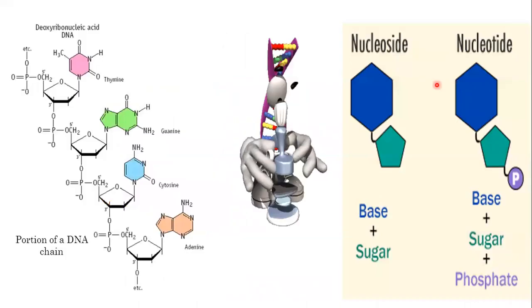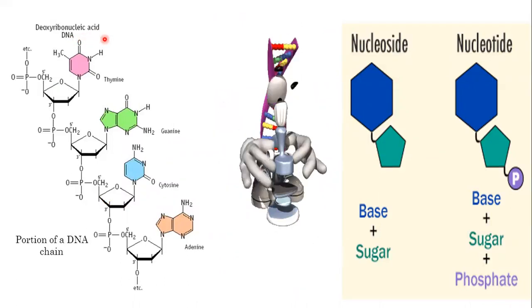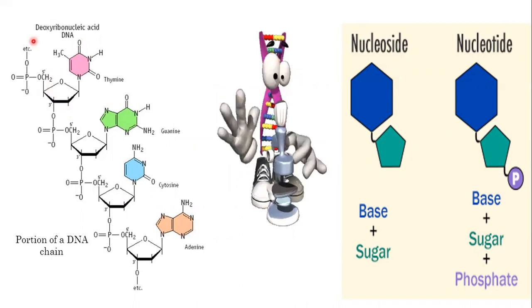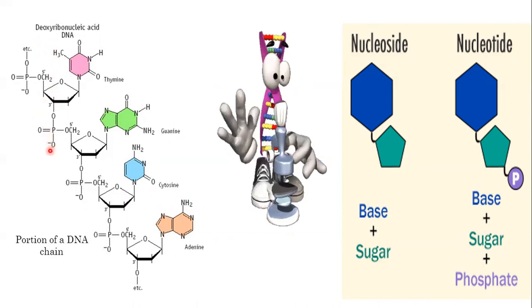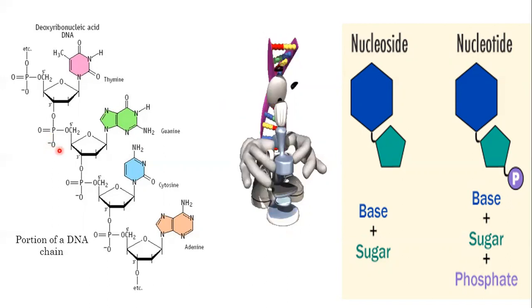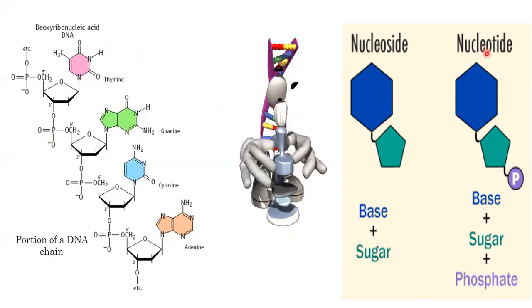DNA stands for deoxyribonucleic acid. In the pentose sugar, the 2' OH is absent — that's why it's called deoxy. The backbone of DNA contains the phosphate group, which imparts a negative charge to the DNA, making DNA acidic in nature.